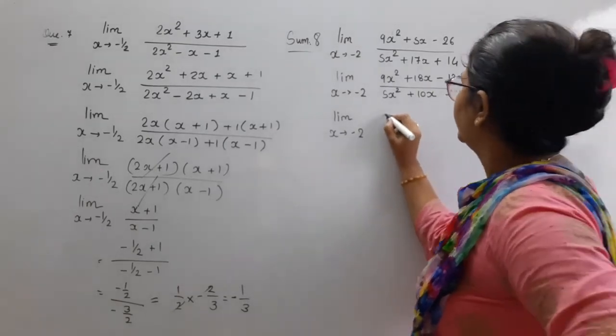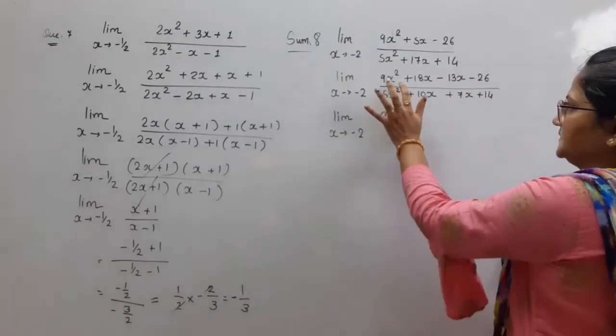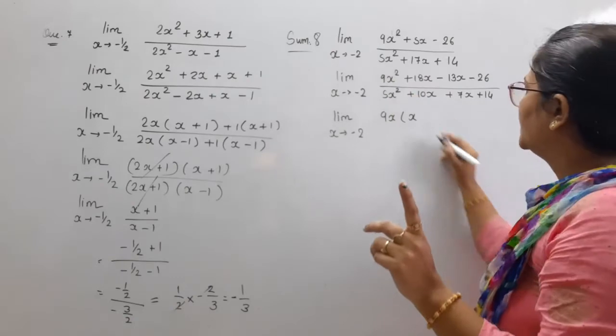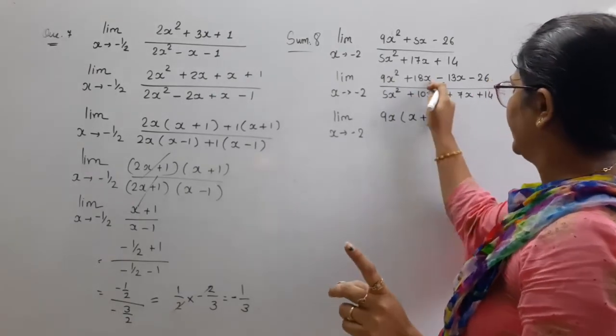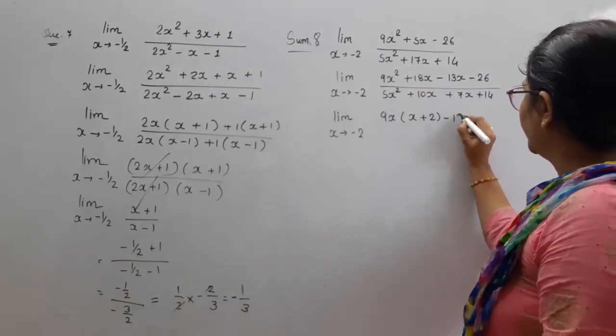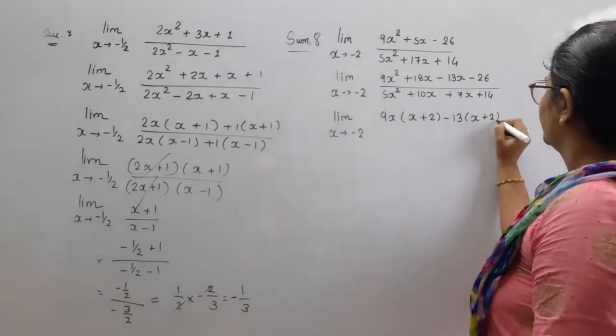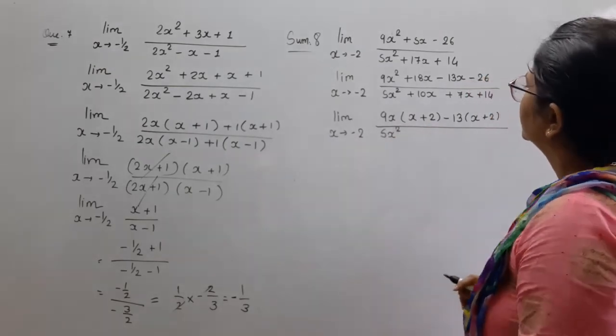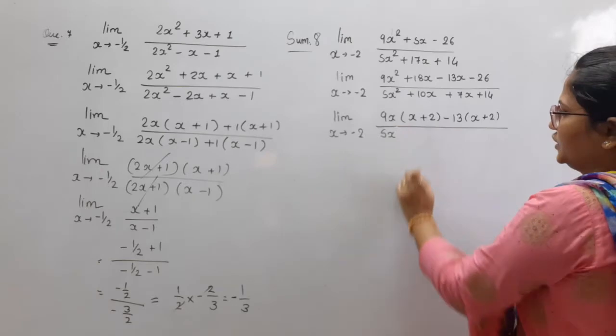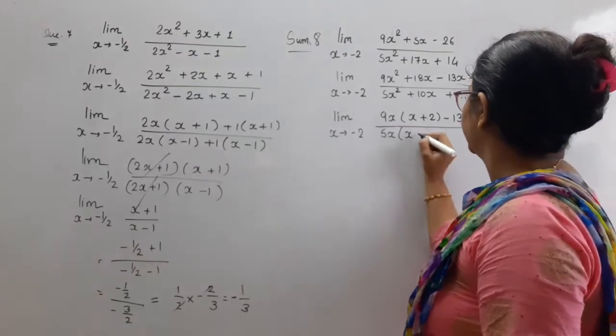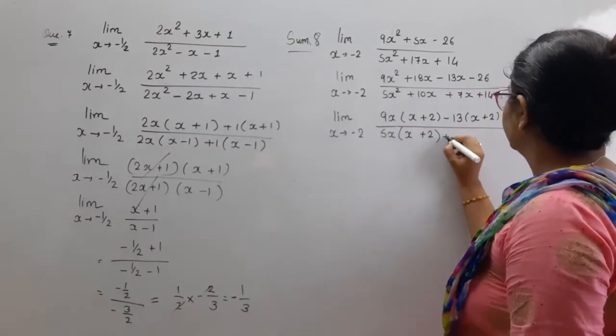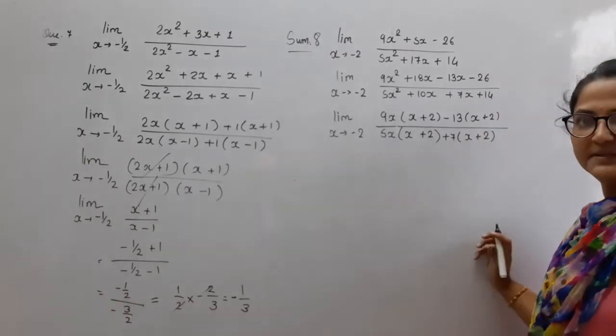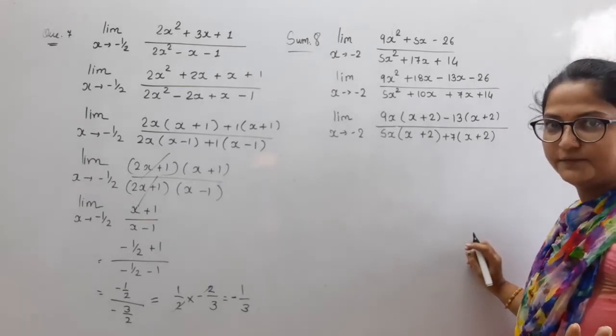Kahan se bhi x plus 2 common mil jayega. Limit x tends to minus 2. 9x ko common nikaalo, to kya bacha idhar? 1x bacha gaya, 2x thay, 1x bacha gaya. Aur idhar kya bacha? Sirf 2 bacha, x ko common me chala gaya. Minus 13 common nikalega, so x plus 2 bacha. 5x square. Sorry, 5x common, 5x common nikaloga, to bacha kya x plus 2. Idhar plus 7 common nikaloga, to x plus 2. Hope so samajh raha ho. Patke huye nahi ho na. Pakka na.